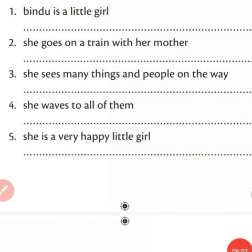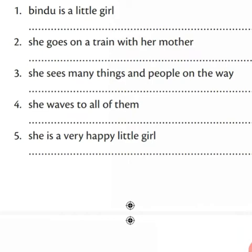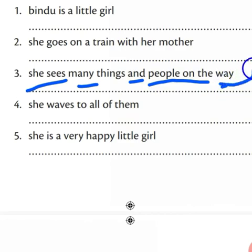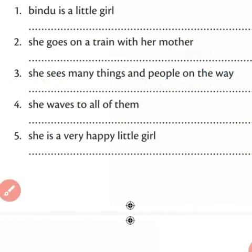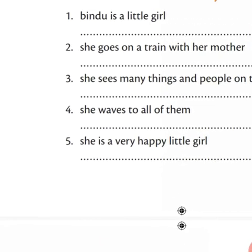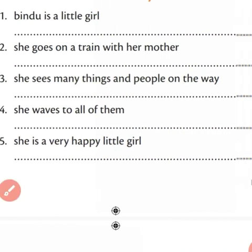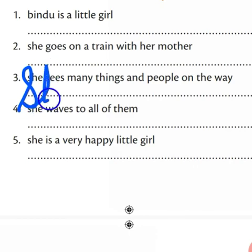Number three sentence: 'She sees many things and people on the way.' If you give a full stop at the end but do not start the sentence with a capital letter, the sentence will be wrong. The first letter should be capital and at the end of the sentence there should be a full stop — both things should be there simultaneously. There is no full stop at the end and the first letter is small, so we have to change S to capital and write a full stop at the end: 'She sees many things and people on the way.' Full stop.